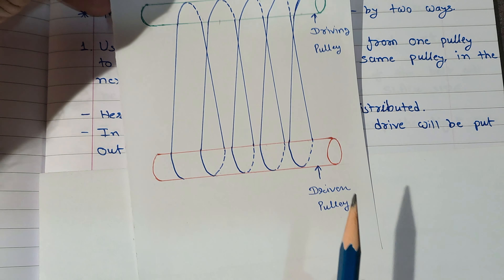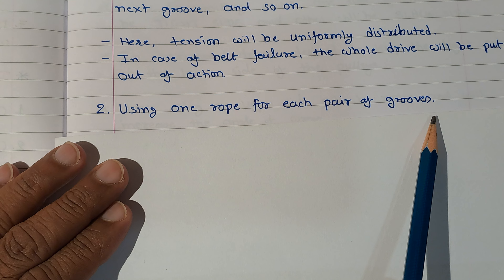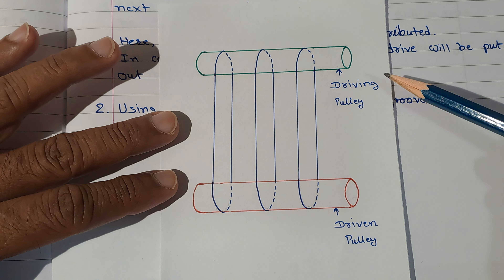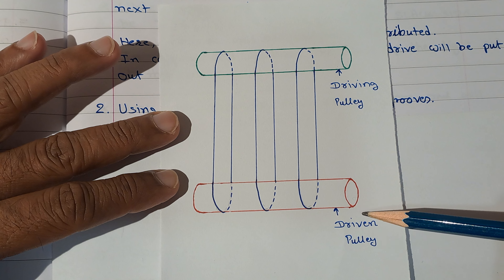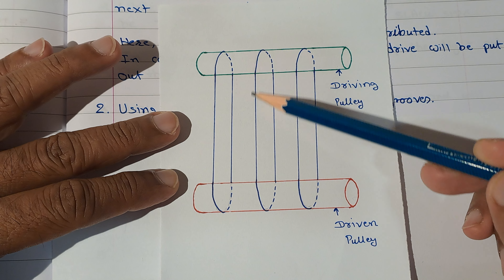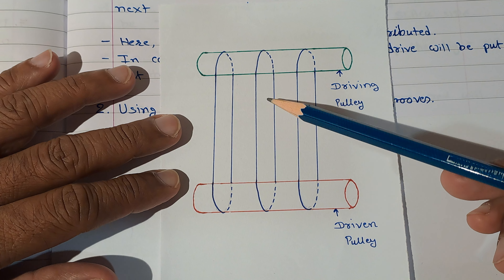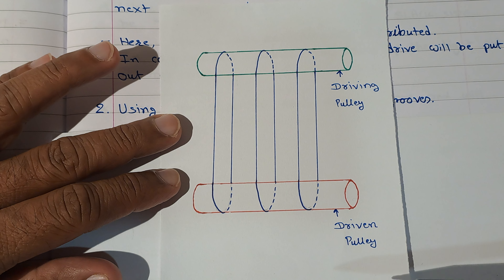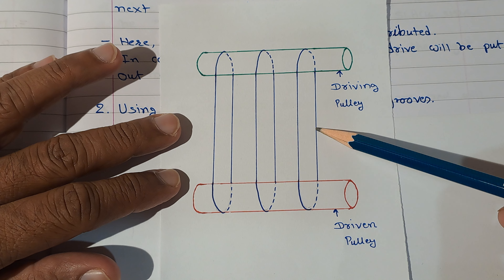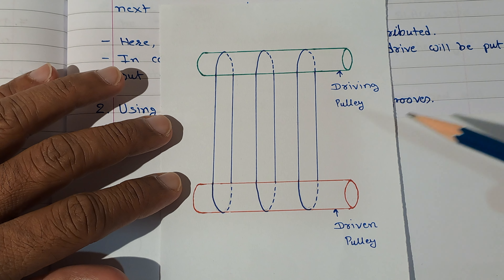Another way of using a multi-grooved pulley is using one rope for each pair of grooves. As seen in this diagram, we have a driving pulley and a driven pulley, and from each pair of grooves a separate rope is passing — this is the first rope, this is the second rope, and this is the third rope. Because it is not possible to have equal length for all ropes, the tension in every rope will be different.